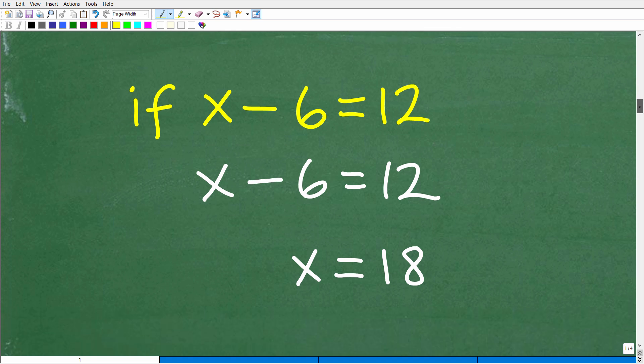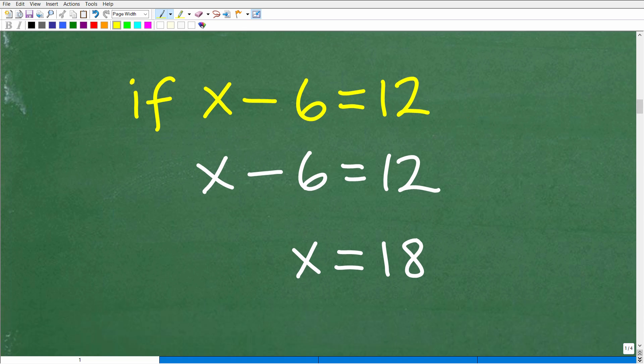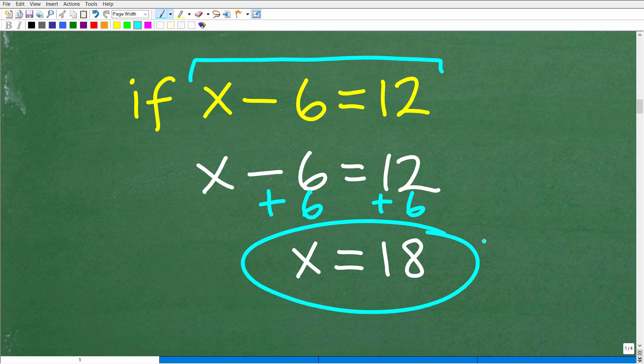Okay, so here we go. So we have if X minus six is equal to 12, again, we're going to focus in on solving this equation. All right, so if X minus six is equal to 12, that means X is what? Well, X is 18. All we have to do is solve this equation. X minus six is equal to 12. So to solve this, all I have to do is add six to both sides. 12 plus six is 18. So X is equal to 18.